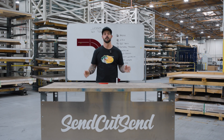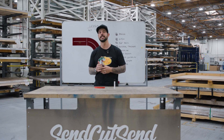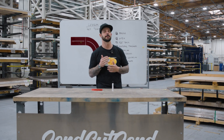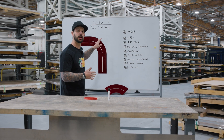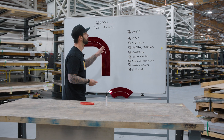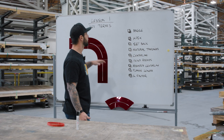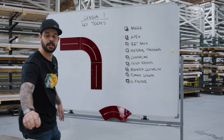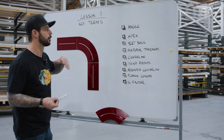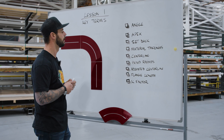In lesson one, we're going to talk about key terms that we need to know when we're doing deep dives into bending. I went ahead and already wrote them out here on the board, kind of in order. We're going to use this diagram right here to explain what these key terms mean.